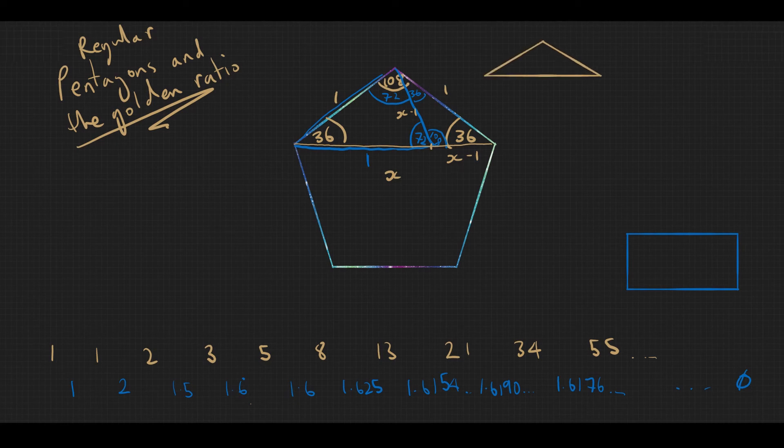So the large isosceles triangle—I'll draw it up here—the large isosceles triangle had side lengths 1, 1, and x. And the small isosceles triangle has side lengths x minus 1, x minus 1, and 1. So if I do the ratio between the short side and the long side, they must be equal if they're similar triangles.